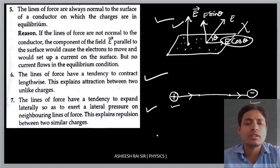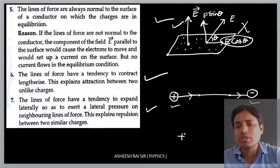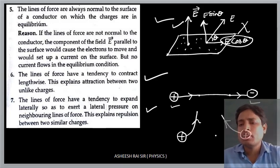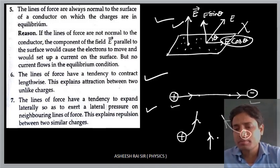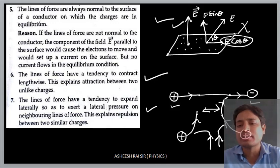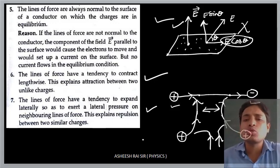Property number seven: the lines of force have a tendency to expand laterally, so as to exert a lateral pressure on neighboring lines of force. This explains the repulsion between two similar charges. Suppose there are two positive charges — the electric field lines start from both. When they meet, they repel each other, tending to go away and bending outward. This shows the repulsion between two like charges.